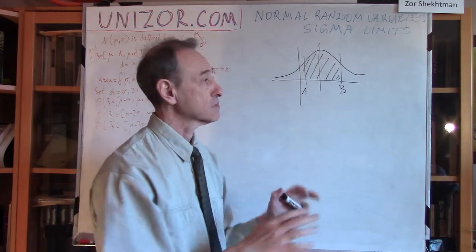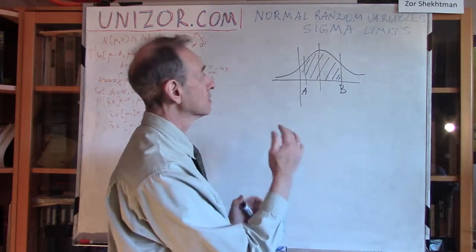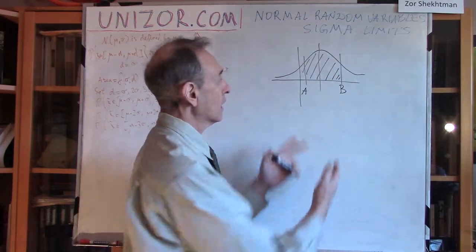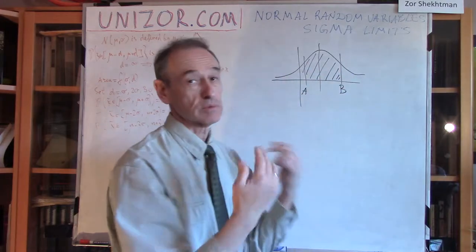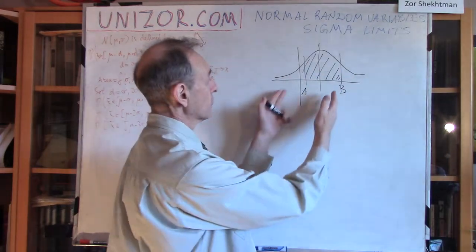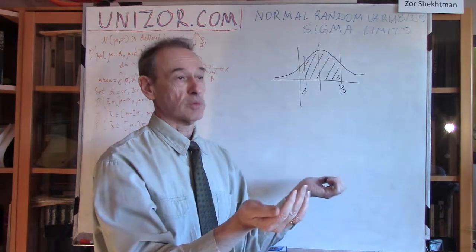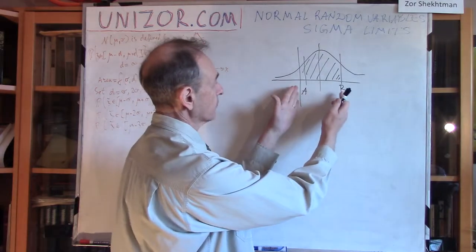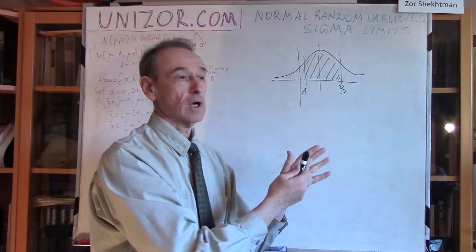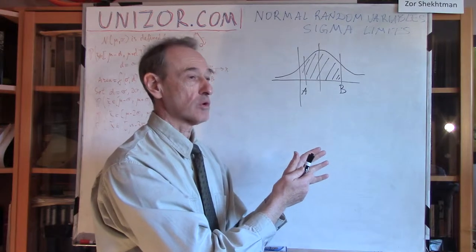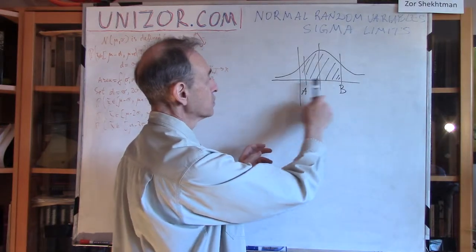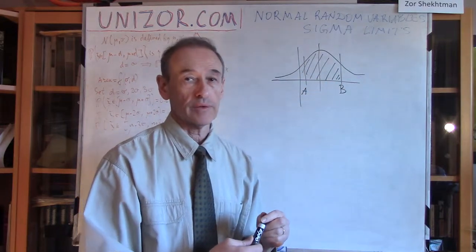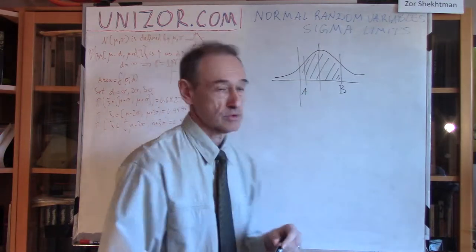We are talking about an intuitive understanding of what a normal random variable is and how it is distributed. The area under the entire curve is equal to 1, because that's the probability of the normal random variable to take any value — obviously 1. If you would like to evaluate the probability of our normal variable to be between points A and B, we calculate the area under the bell curve from that point to that point.